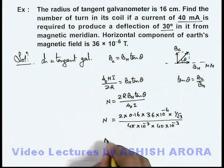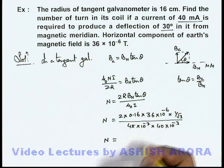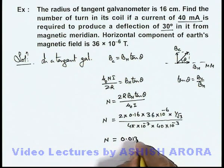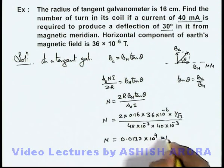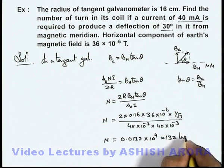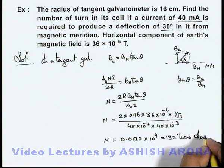If we simplify this, we get the result as 0.0132 × 10⁴, which equals 132 turns in the coil. That is the answer to this problem.